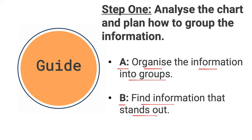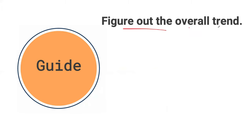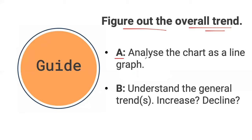Then you want to figure out the overall trend. We can't just look at details — we have to understand the overall trend. There are two ways to do this: analyze the chart as a line graph, thinking in terms of lines rather than bars, which helps you understand general trends, sharp decreases, and sharp increases. Then understand the general trend — whether there is an increase or a decline. This is all part of step one: the preparation and outline work to dissect the writing prompt and bar chart.